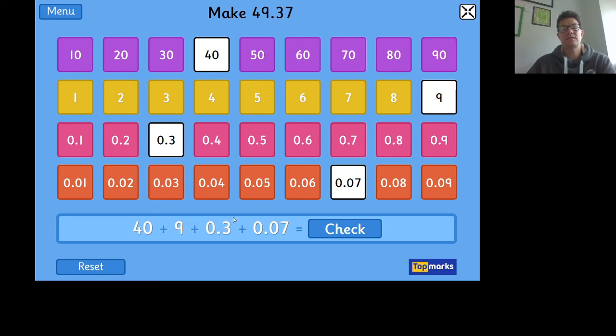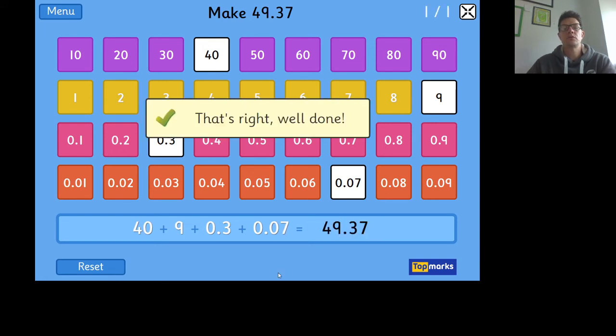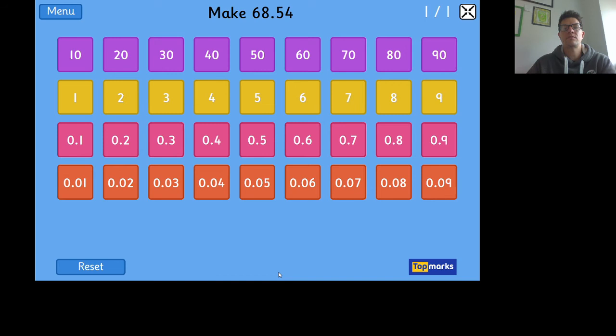We'll do one more together, and then you can have a go. Make 68.54—it's nearly 69, but we haven't got a whole number here, so it's gone into decimals again.